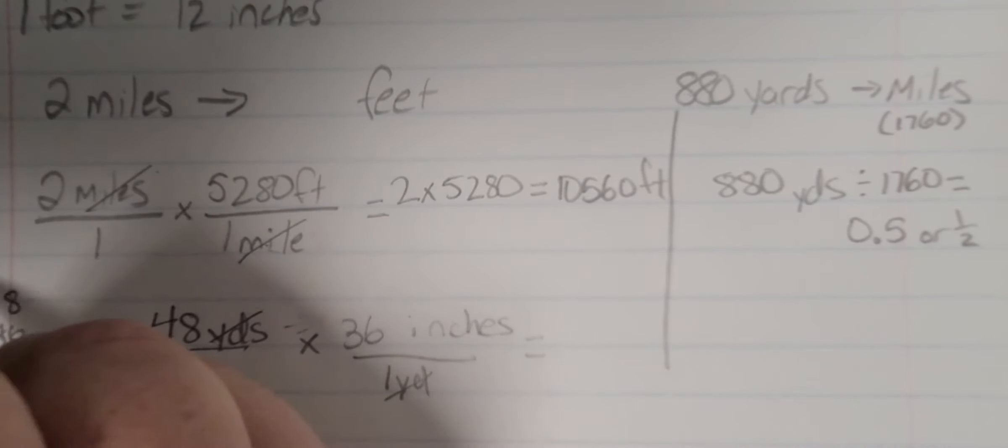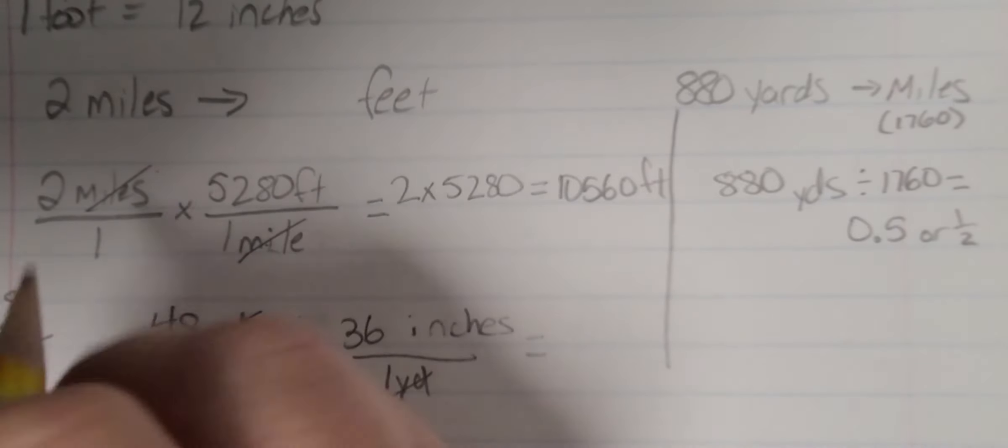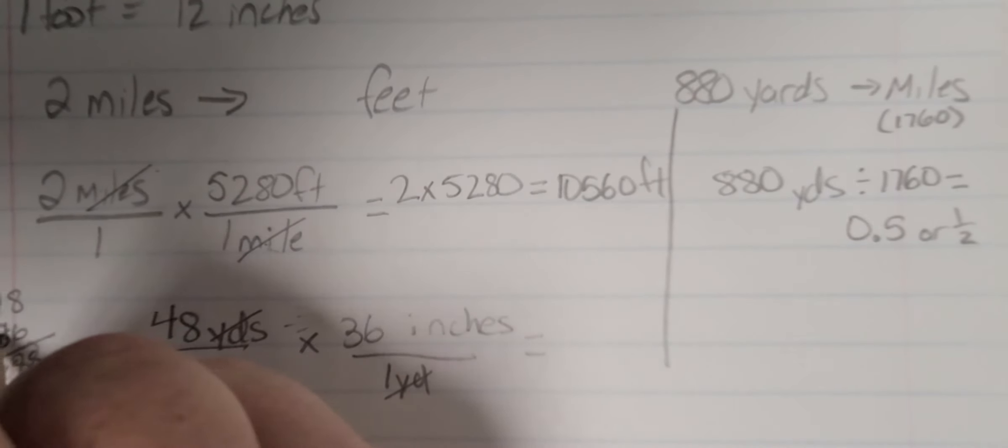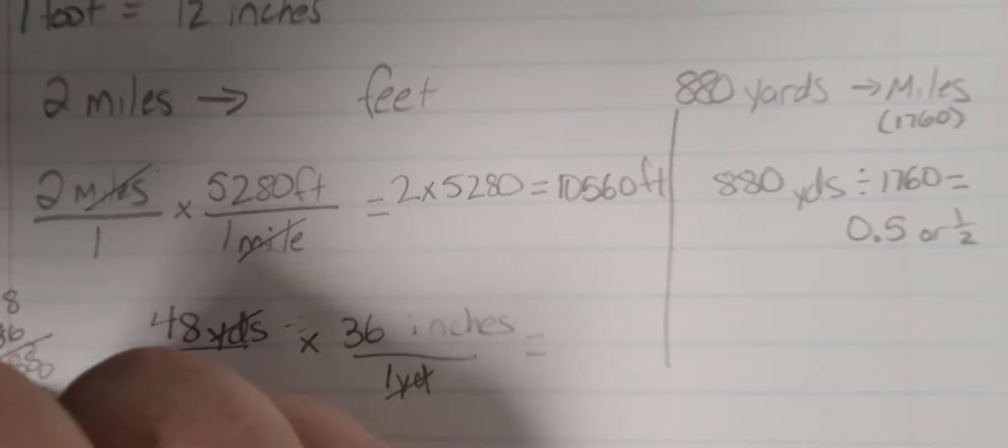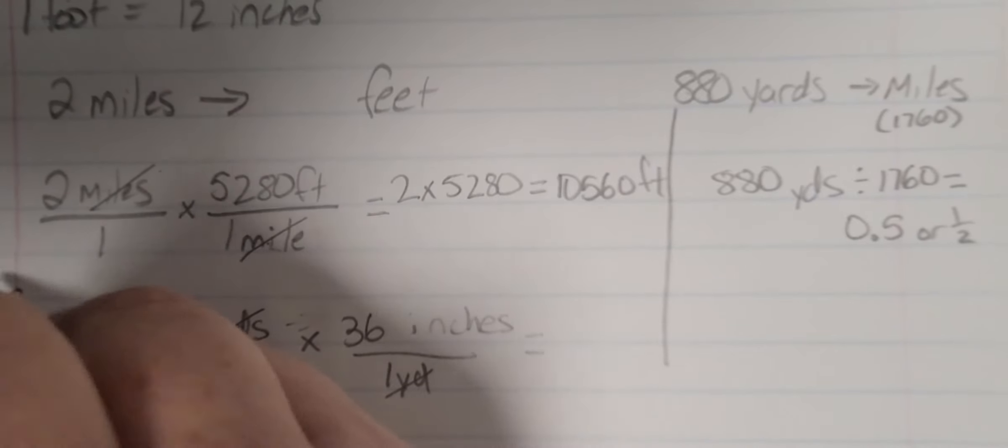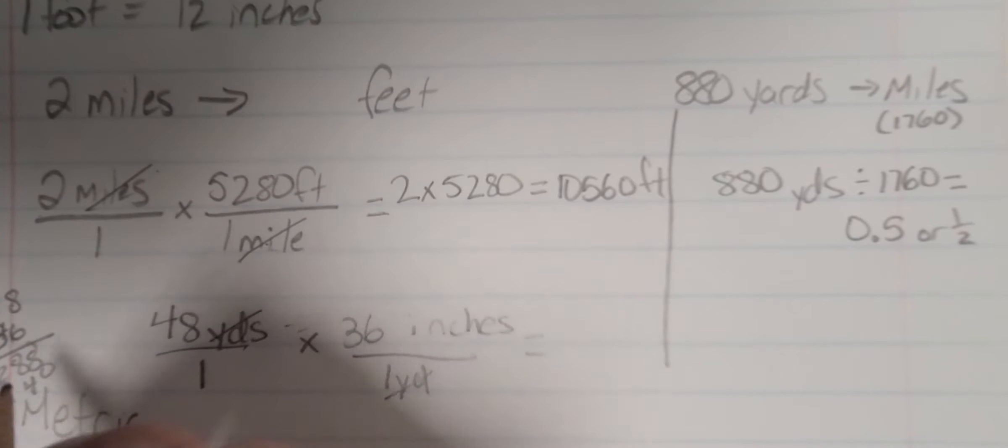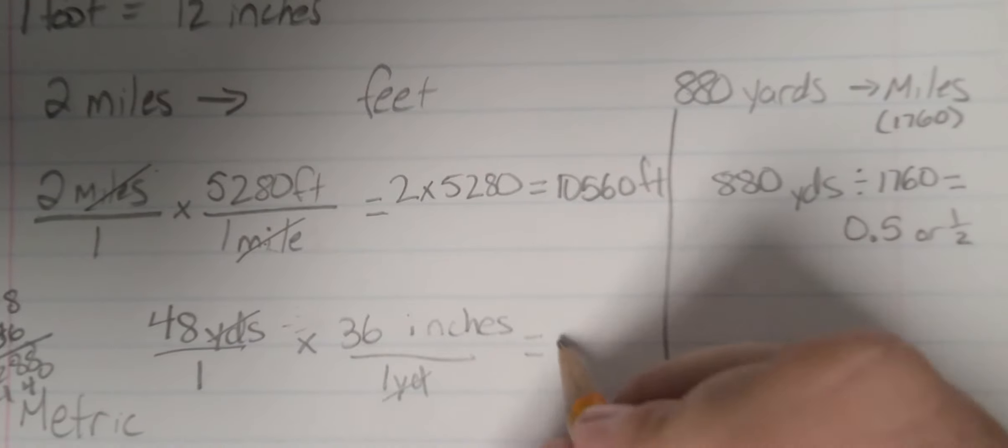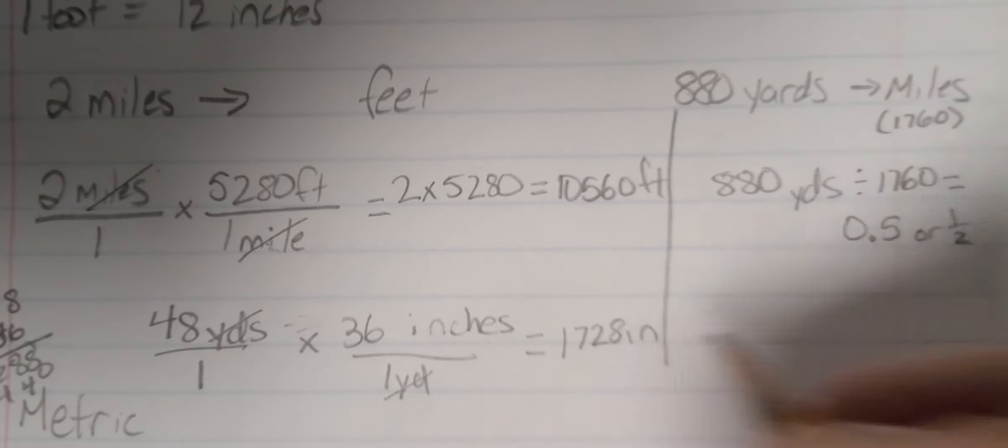So, 8, 4, 288, and then 3, so I'm going to drop a 0. That gets a 4, 2, 1440. So this gets us 1,728 inches.